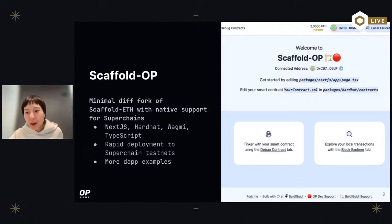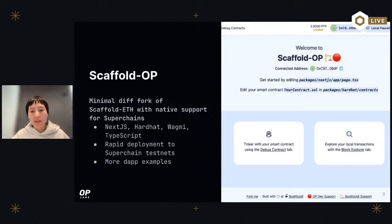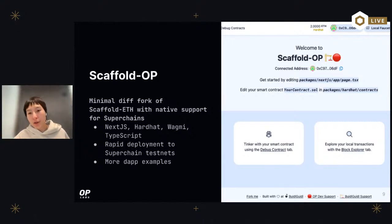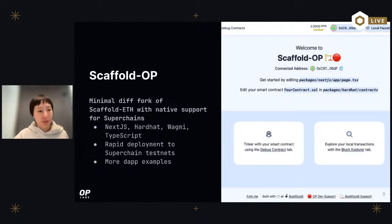Now that you're convinced about building your decentralized app on the OP Stack and Super Chain, how do you actually do it? We introduced Scaffold OP, which is a minimal-difference fork of the popular starter kit Scaffold-ETH. Scaffold OP adds functionalities like the Super Chain Dev Console, Super Chain testnets, and you can start building a DApp on the Super Chain in less than five minutes. For the rest of this workshop I'll give a quick demo of how you can go from zero to one hundred using Scaffold OP.